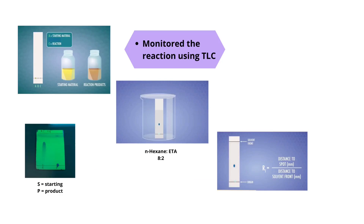Reaction completion was monitored using thin layer chromatography. The TLC was performed in n-hexane and ethyl acetate in an 8:2 ratio as solvent, by spotting both the starting material and reaction mixture on a TLC card. The figures show two spots for the product that are different from the starting material, indicating reaction completion.